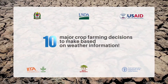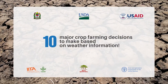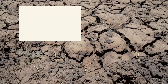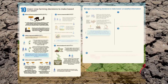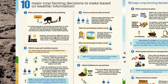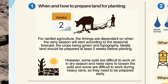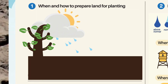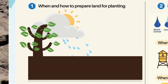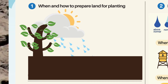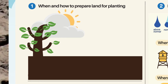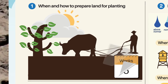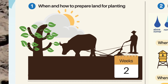10 Major Crop Farming Decisions to Make Based on Weather Information. When and how to prepare land for planting: For rain-fed agriculture, the timings are dependent on when the rainy season will start according to the seasonal forecast, the crops being grown, and topography. Ideally, land should be prepared at least two weeks before planting.